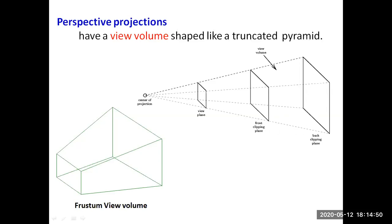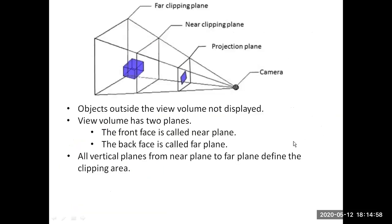The view volume uses clipping planes, specifying x min, x max, y min, y max, and the distances of the front and back clipping planes. This is called a frustum in 3D viewing. Whatever object is inside the viewing volume can be displayed, and whatever is outside cannot. The view volume is defined by a near clipping plane and a far clipping plane, and all vertical planes from near to far define the clipping area.